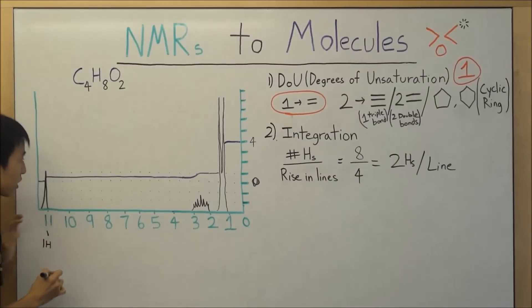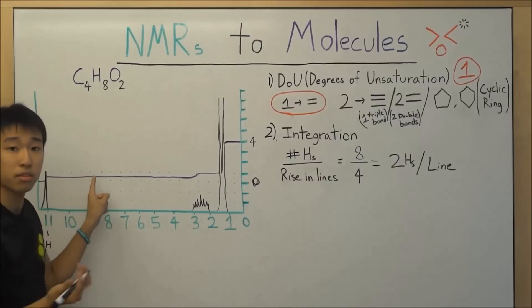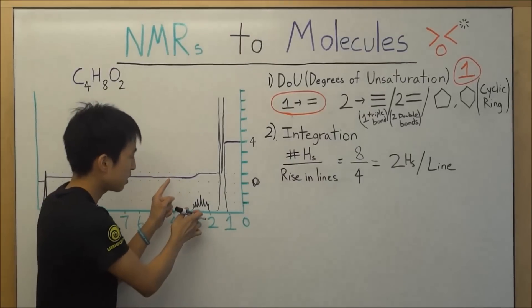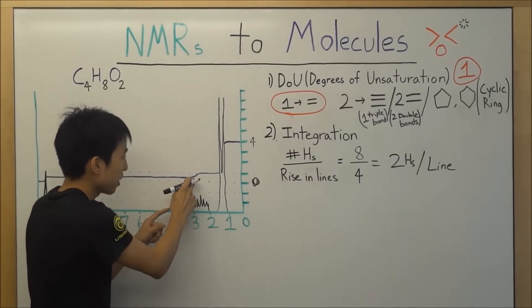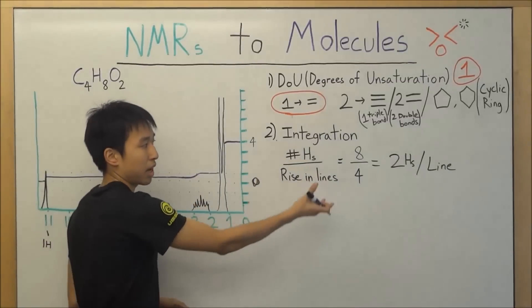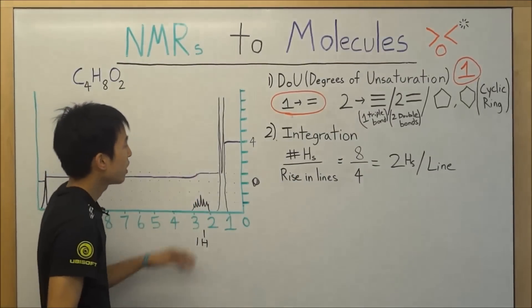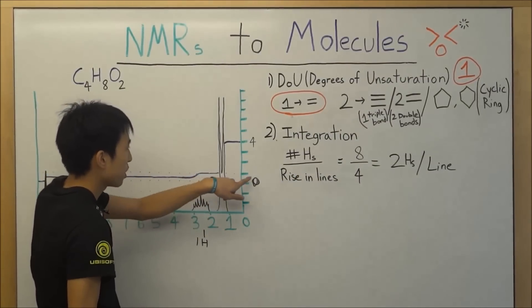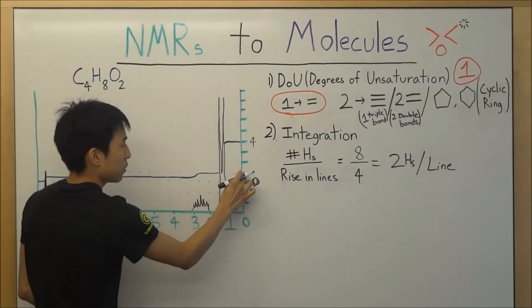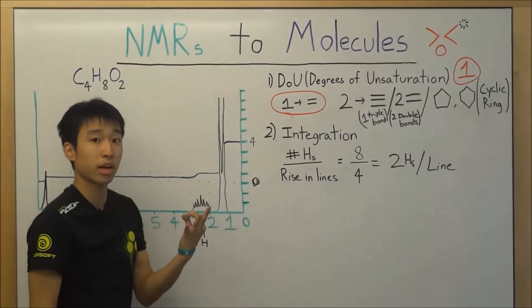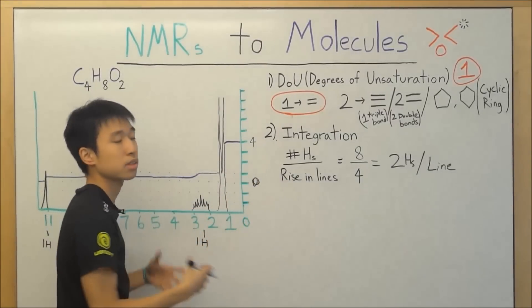So one hydrogen over here and then as you go across nothing really changes. But once you get to the septet over here, it goes up by another half a line. So if it goes up by half a line we know from integration a half a line is basically just one hydrogen. And then at the doublet we went up from, let's see, we went up from one, we went one, two, three, so three lines and three lines means six hydrogens.